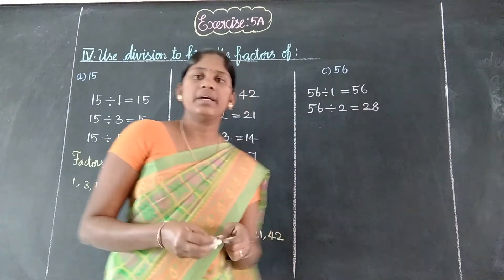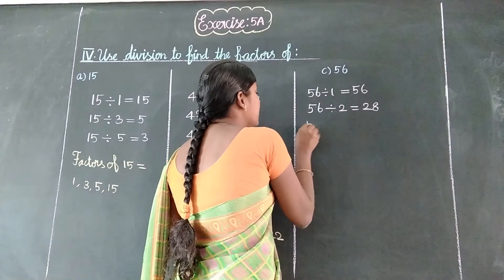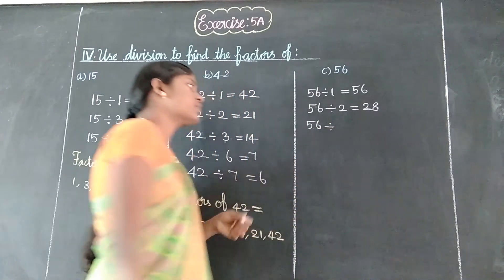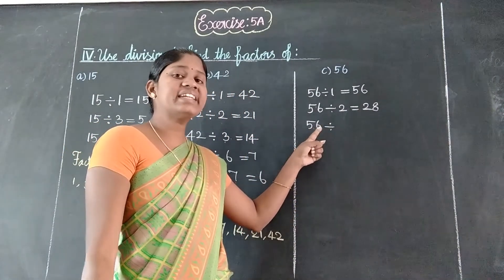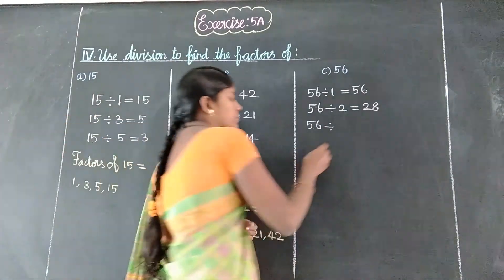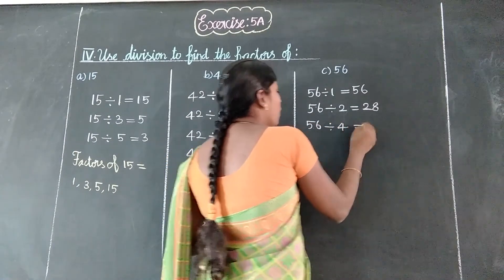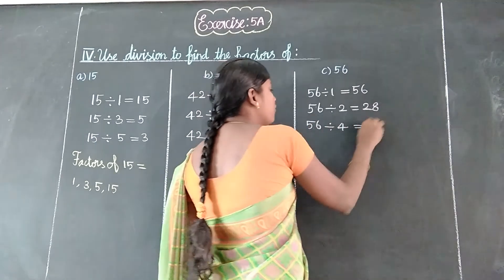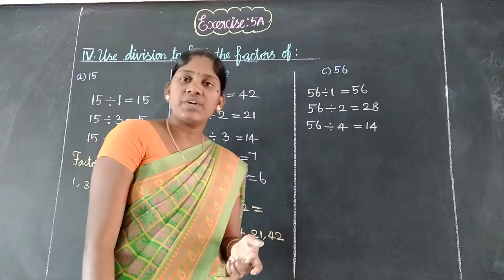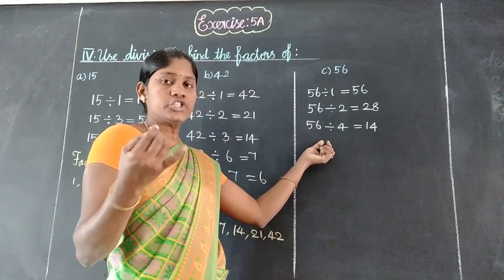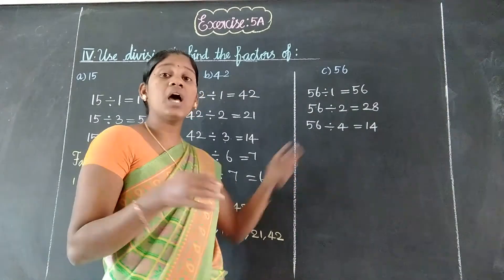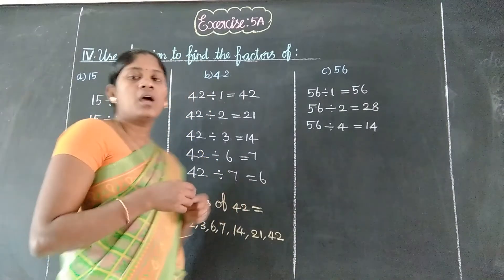So 28. Next, 56: 3 table — 3 goes into 56 with remainder 2 — not divisible. Next, 4 table — yes. 4 × 14 = 56. So 14. Next, 5 table: 56 — no. 6 table: 56 — how many 6's?